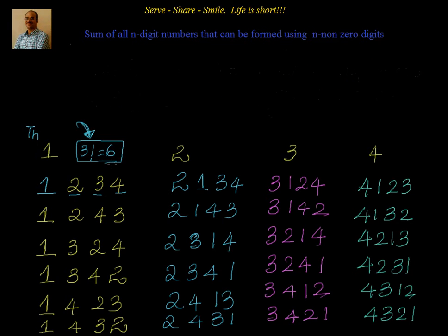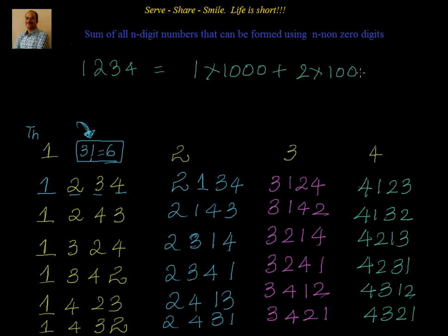Now what we will try to do — we will take each number and try to expand it. What is 1234? It is nothing but 1 into 1000 plus 2 into 100 plus 3 into 10 plus 4 into 1. So what we will try to do now is take the 1000s position, add all the digits there, and multiply that with 1000. Then we will take all the 100s position numbers, add them, and multiply by 100, and similarly go on.